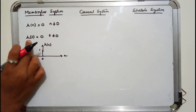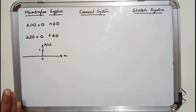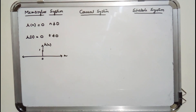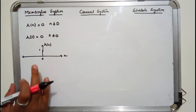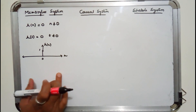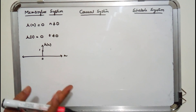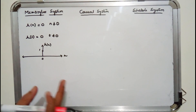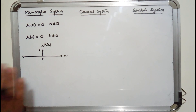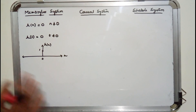In the case of continuous time, if h(t) is equal to zero for t not equal to zero, then it is called a memoryless system. When the input-output relationship is given, a system is said to be memoryless when the output at any instant depends upon the input at the same instant. If the output depends upon the input at a previous or past instant, then the system is said to have memory.